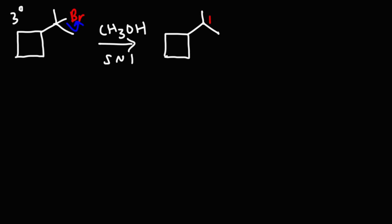The leaving group departs in the first step, giving us a tertiary carbocation. Because we have a four-carbon ring, we know it's going to expand into a five-carbon ring — the positive charge is one carbon away from the ring, so this is a one-carbon expansion. Let's label the carbons one through five; breaking the bond between carbons one and two sends those electrons toward carbon five, giving us a five-carbon ring.